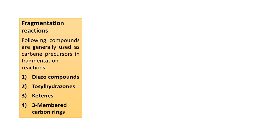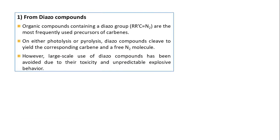Under fragmentation reaction we have a total of 4 types, depending on what type of compounds we are using as a precursor for carbene. These are: diazo compounds, tosyl hydrazone, ketene, and three-membered carbon rings. These 4 types of molecules will be used as carbene precursors. We will see these reactions one by one. The first one is diazo compounds as precursor — the most frequently used precursor if we want to synthesize carbene by the fragmentation method.